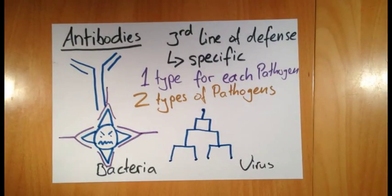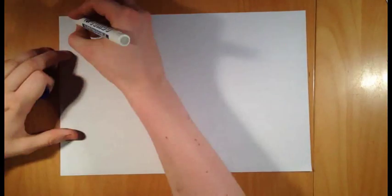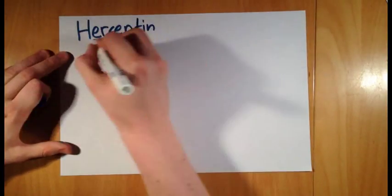Just as a reminder, there are two types of pathogens: the bacteria and the viruses. To explain what monoclonal antibodies are, I'm going to use the example of Herceptin.